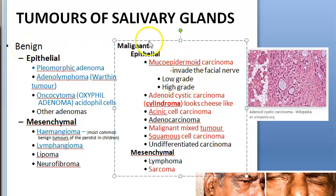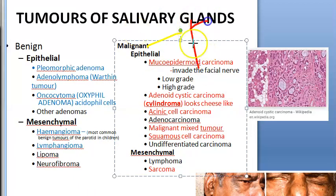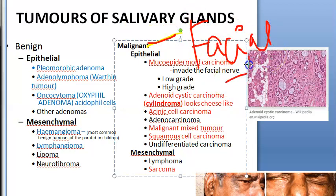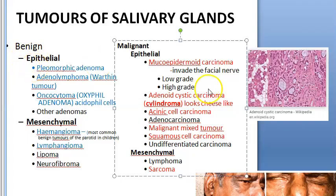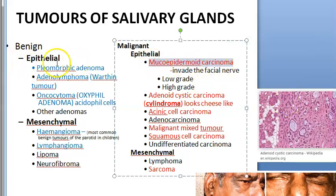For malignant salivary gland conditions, a standard feature is that they affect the facial nerve, so there can be facial nerve paralysis. They can also affect lymph nodes, muscles, and neck structures. Treatment is mostly parotidectomy; sometimes the facial nerve must be sacrificed. These are standard findings you would write for all malignant parotid tumors.